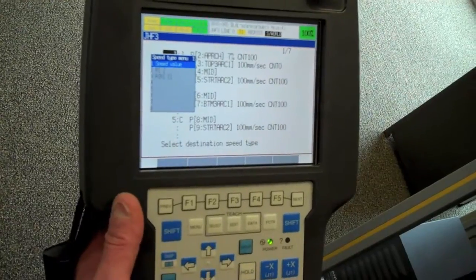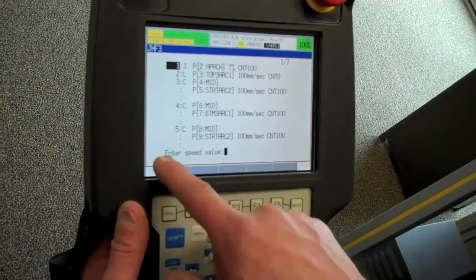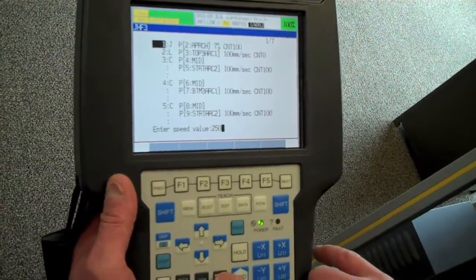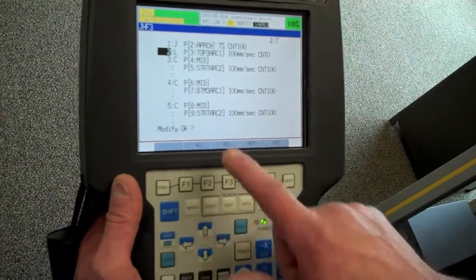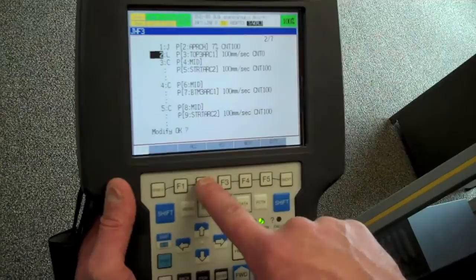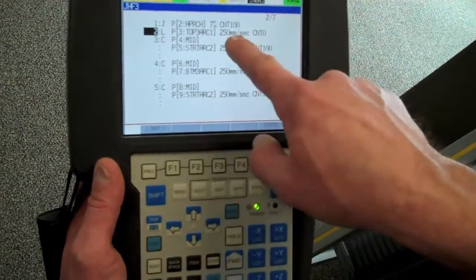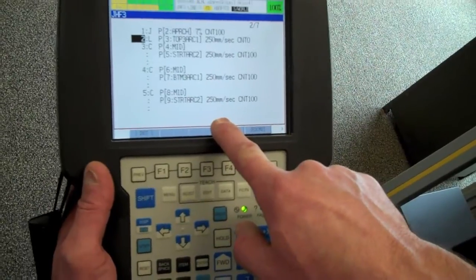And we want to select speed value again. And now we want to enter the speed value. I'm going to enter 250. Hit enter. Modify okay. Yes, I want to modify all the lines. We're going to hit F2. And you can see it just changed all the motion speeds to 250.